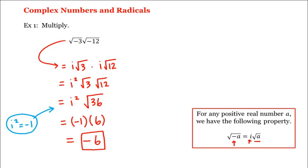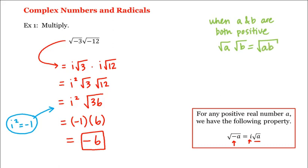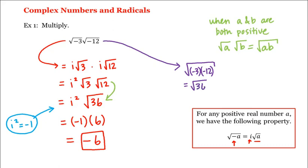Now we have to be very careful here. When a and b are both positive, the square root of a times the square root of b is equal to the square root of a times b — which we just applied, so that the square root of 3 times the square root of 12 is the square root of 36. But when a and b are both negative, we cannot use this property. Watch what happens if we try to use it from the very beginning: we'd have the square root of negative 3 times negative 12, which is the square root of positive 36, which is positive 6, not negative 6. So be really careful here.